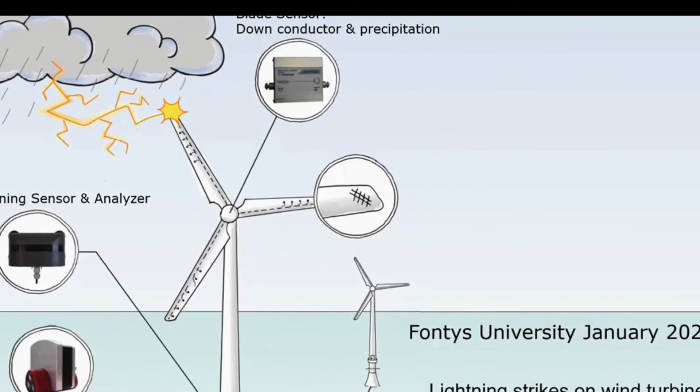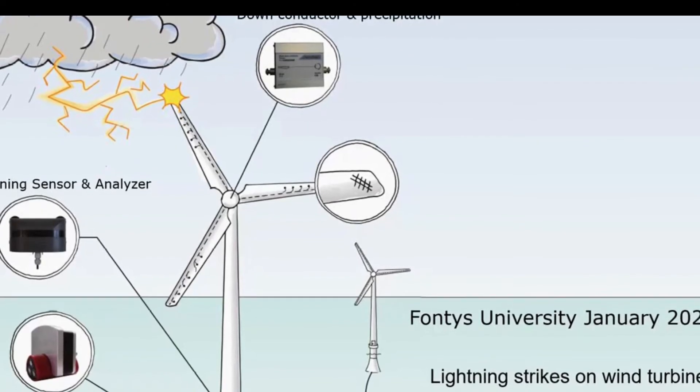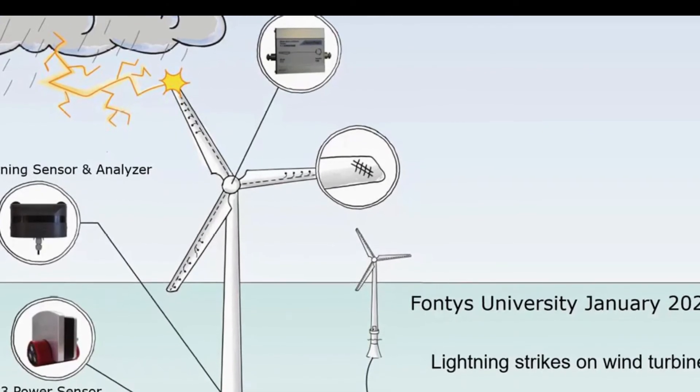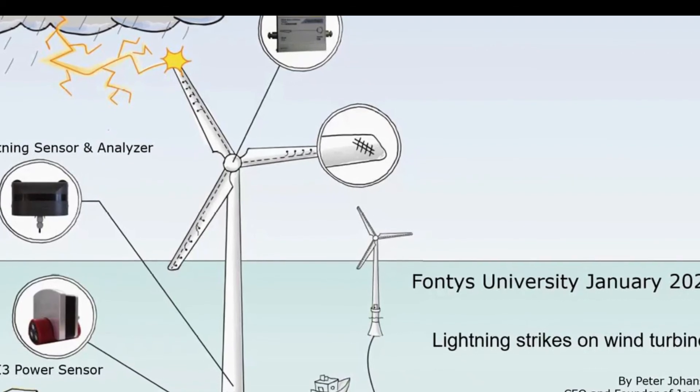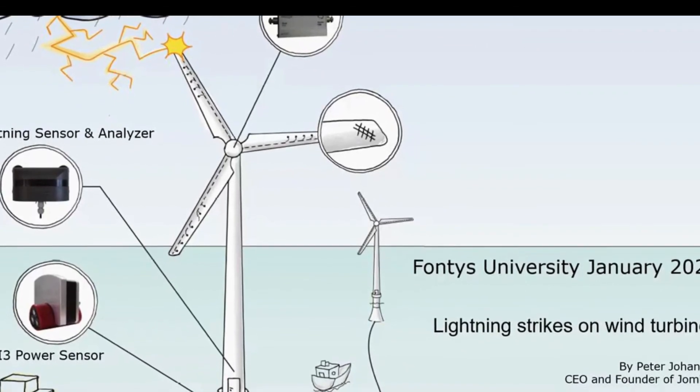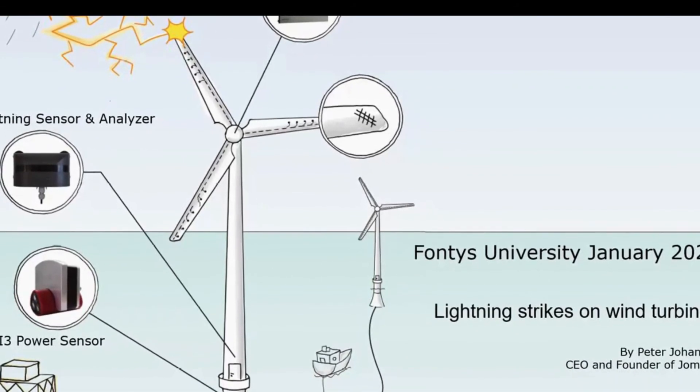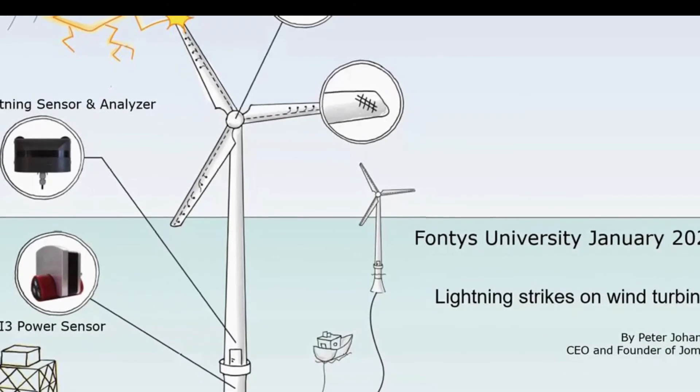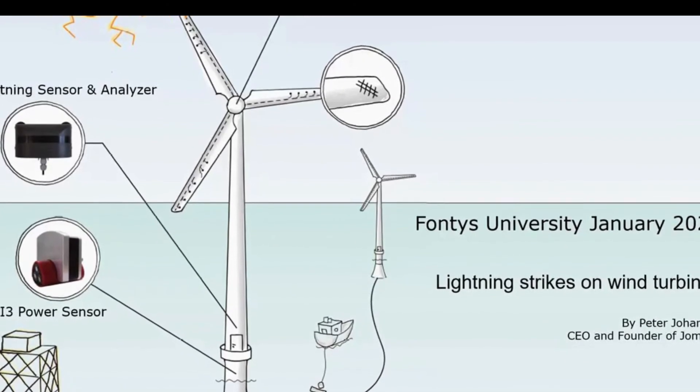Another key aspect of lightning protection is grounding. Wind turbines have special connections to the ground, sort of like a lightning safety outlet. When lightning strikes, it flows harmlessly into the ground instead of causing damage. It's like giving lightning a safe path to follow.